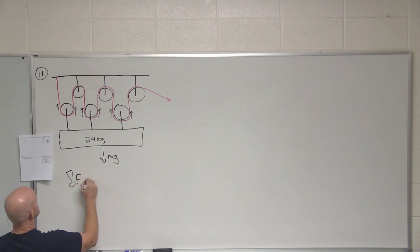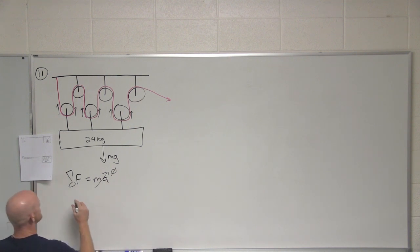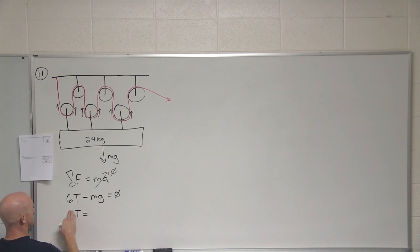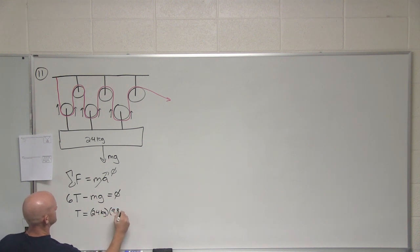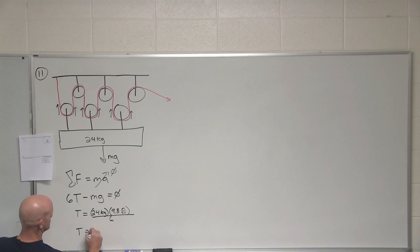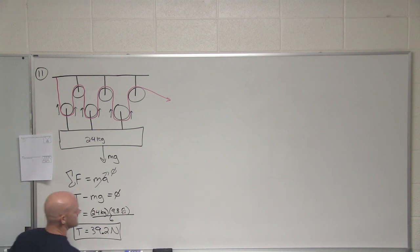So in this case, sum of our forces is going to equal ma. So in this case, as long as we're either leaving it suspended or moving it at constant velocity, then we'll have no acceleration. Sum of the forces is zero. In this case, the tension gets to act six times. So we'll do 6T = 24 kilograms times 9.8 meters per second squared. T = 24*9.8/6. And can somebody get me a tension in that rope? Good. 39.2 Newtons. There is the tension in the rope in your pulley.